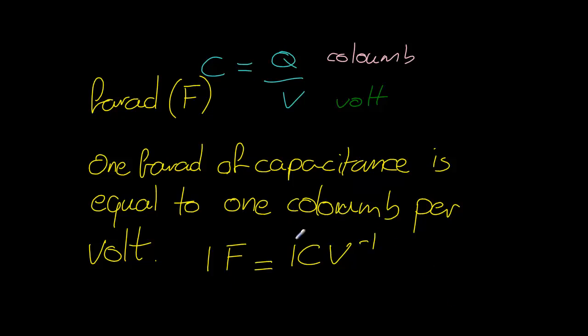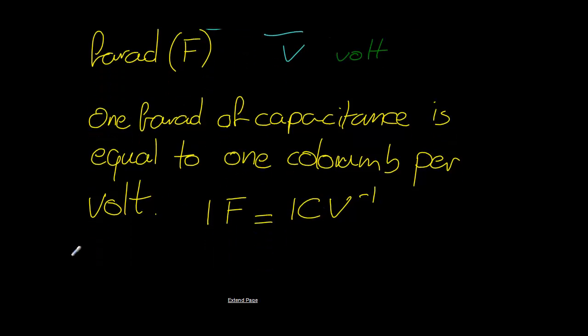A Farad is a unit of capacitance. It's actually quite a large unit. So when you get capacitors, they often are printed in microfarads, nanofarads, or even going down to picofarads. You've got to remember the values of these prefixes. Micro is equal to 10 to the minus 6, nano is 10 to the minus 9, and pico is equal to 10 to the minus 12.